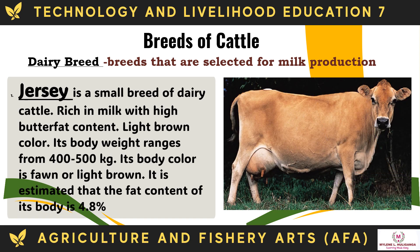The Jersey is a small breed of dairy cattle, rich in milk with high butter fat content and a light brown color. Its body weight ranges from 400 to 500 kg. Its body color is fawn or light brown, and it is estimated that the fat content is 4.8%.